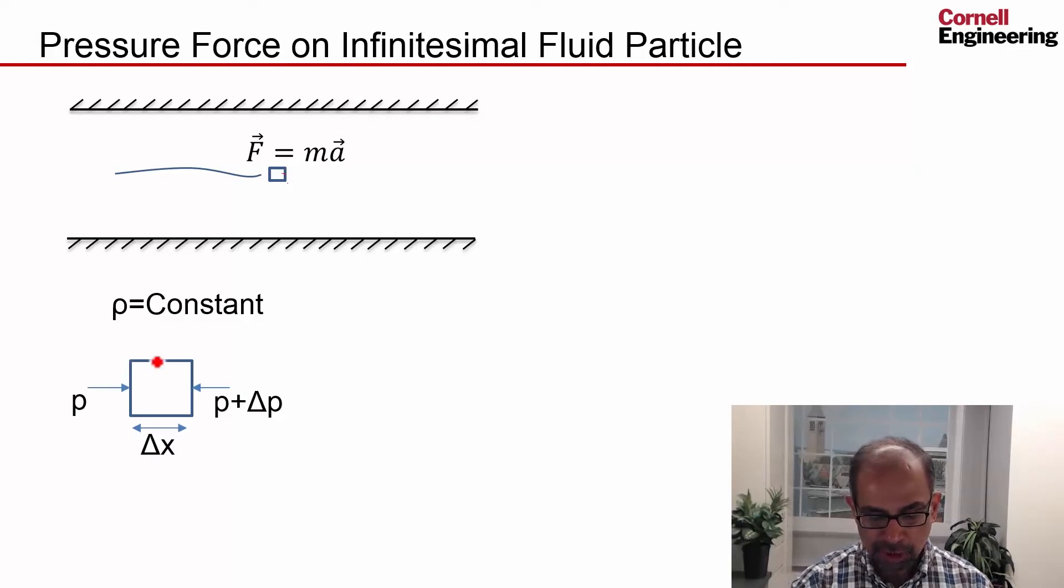If I draw out the pressure force in the x direction, there's p on this face, and pressure acts along the inward normal. The pressure on the right face is slightly different from the pressure on the left face. We are looking in the limit as delta x tends to zero. So it's the same game as before.